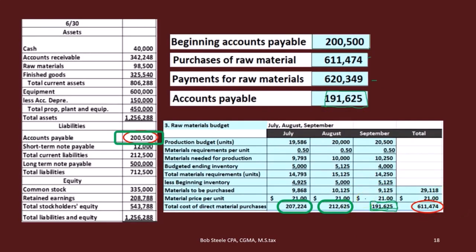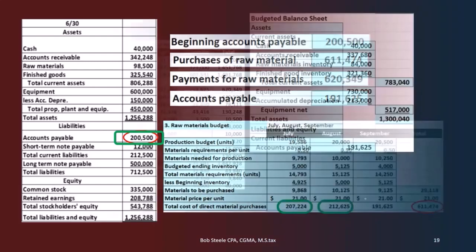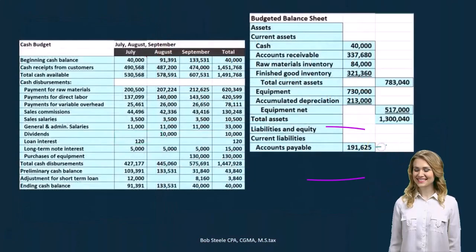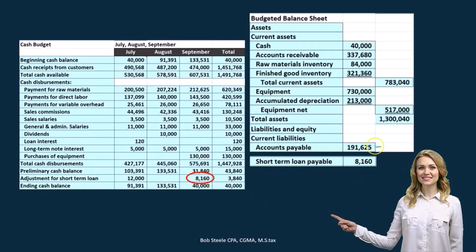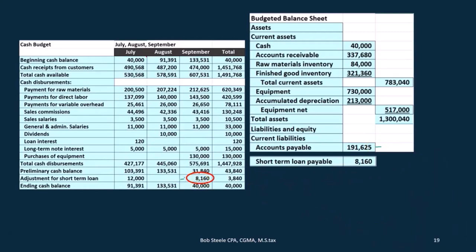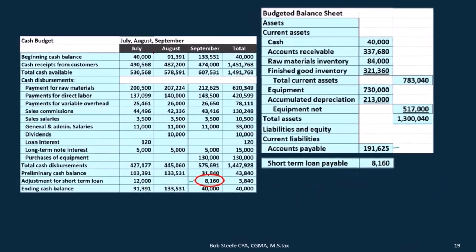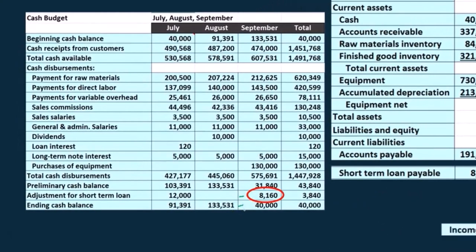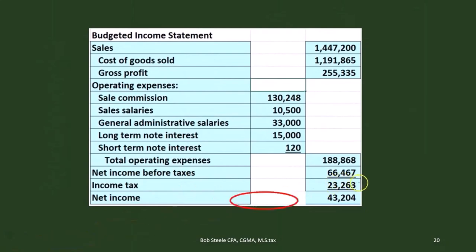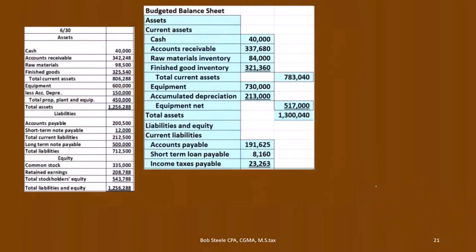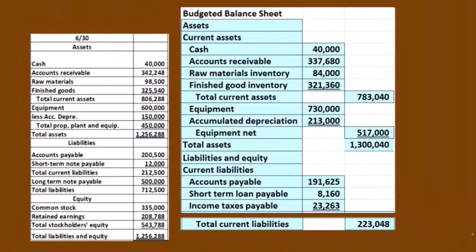The $191,625 remaining represents the purchases made in September, which will all be paid off in the following month. Next, we have the short-term loan payable of $8,160, which we take from our cash flow statement because that loan fluctuates — it's like a line of credit we needed to reach our minimum cash balance of $40,000. Then we have income tax payable, which comes from the income statement. Adding these together gives us the total current liabilities.